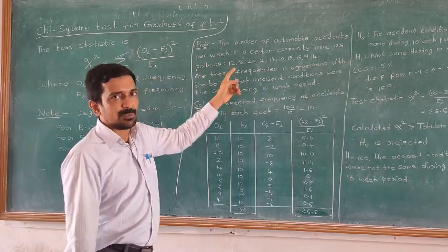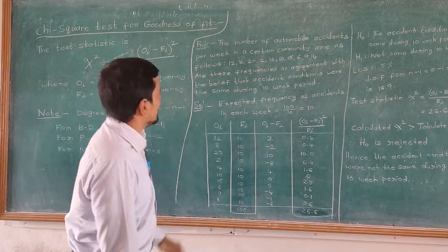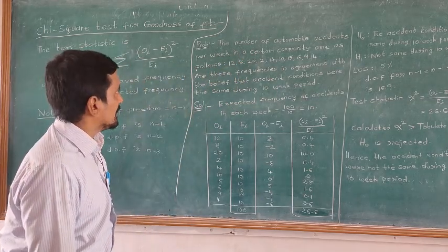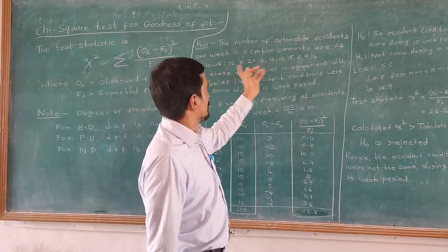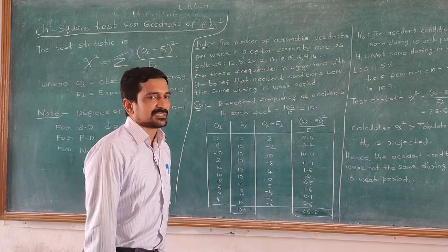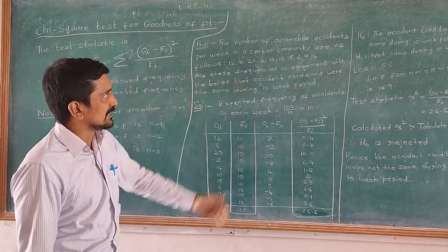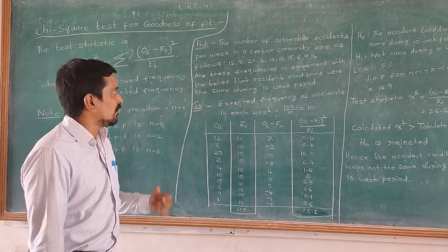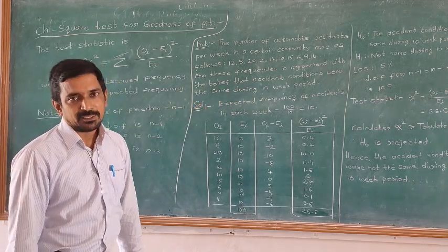Coming to the problem: the number of automobile accidents per week in a certain community are as follows. The values given are 1, 8, 22, 14, 10, 15, 6, 9, 4. The question is whether the accident conditions were the same during that ten-week period.